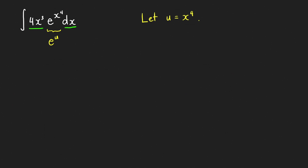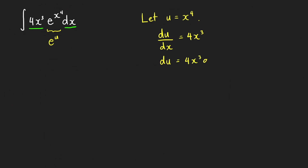It's very important to use Leibniz notation when taking the derivative. We think of du and dx as separate entities, so we multiply both sides by dx: du equals 4x cubed dx. We've now found an expression for 4x cubed dx, which equals du. Therefore, we can write our integral as the integral of e to the u times du.